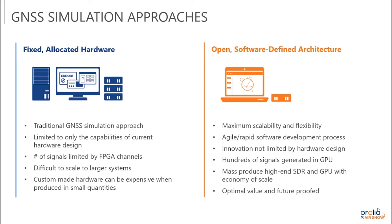Looking at approaches to GNSS simulation: the traditional approach has always been to use fixed allocated hardware. This is what you'll find in the market today — almost every simulator out there uses fixed allocated hardware designed specifically for GNSS simulation. They're typically using FPGAs to generate the modulated data, and the IQ data stream is done in FPGA. That usually limits the number of channels or signals that can be simulated — simulators say they can do 12 or 300, but those are fixed hardware channels that can't really change.